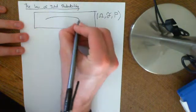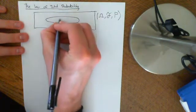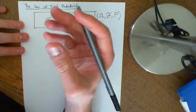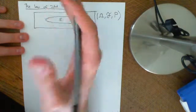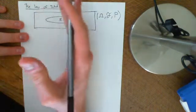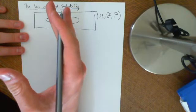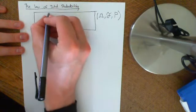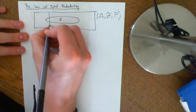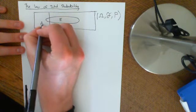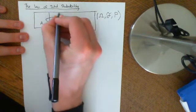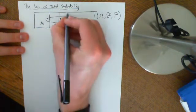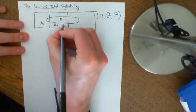If we take an event E, then basically what the law of total probability is about is breaking down the probability of E into lots of little chunks. It's about splitting your sample space up into lots of different events — A1, A2, A3.